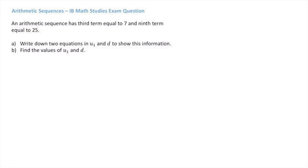To answer this first question, we need to use the information given as well as the formula for the nth term of an arithmetic sequence. We're told the third term is equal to 7, so u3 equals 7. We're also told that the ninth term equals 25, so u9 equals 25. The formula for the nth term, which is in the formula booklet, tells us that un equals u1 plus n minus 1 times d.